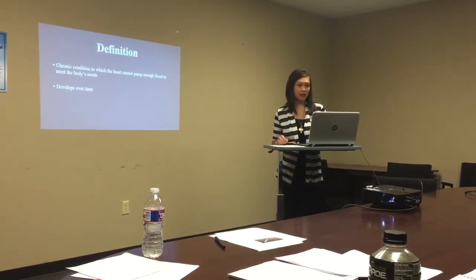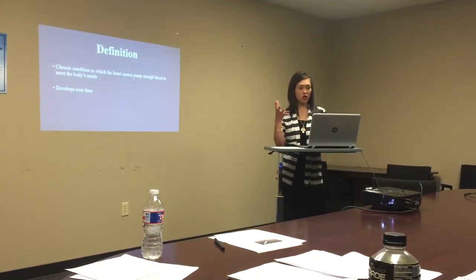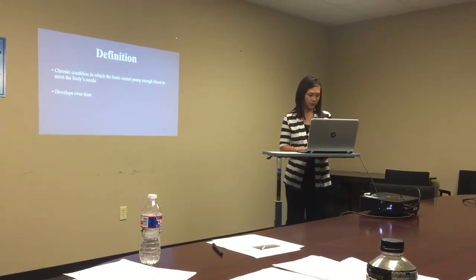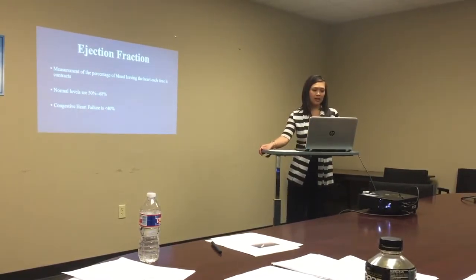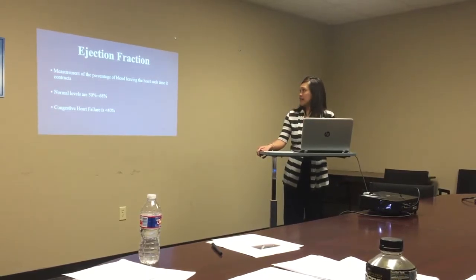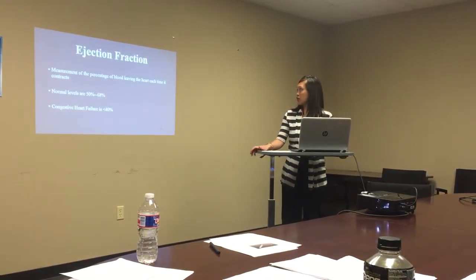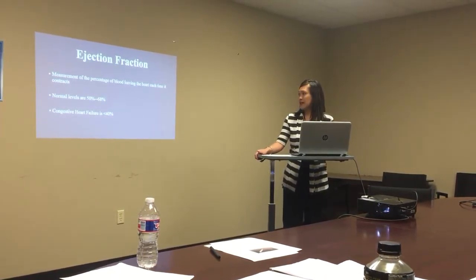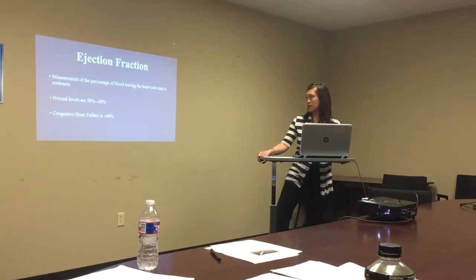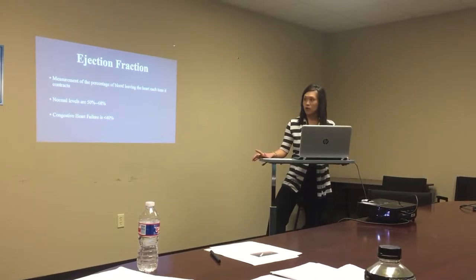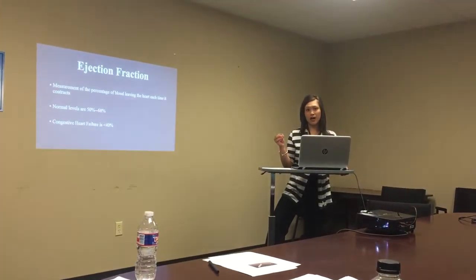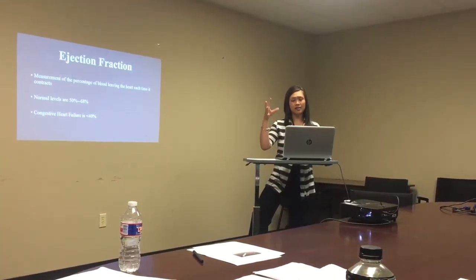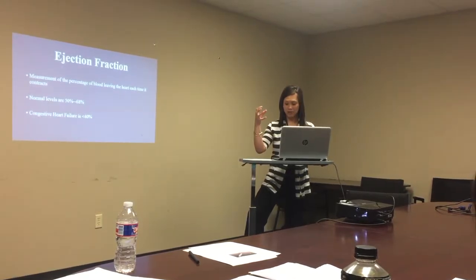This develops over time — it's scarring of the heart, and the more it scars, the less it will be able to pump, and the heart's pumping actually grows weaker. It is measured by your ejection fraction, which is the measurement of the percentage of blood leaving the heart each time it contracts. Normal levels are 50 to 68%, and congestive heart failure is diagnosed with less than 40%. That's when they can do a coronary angiogram — a heart cath — where they insert a catheter and use dye to show exactly how much that heart is pumping.